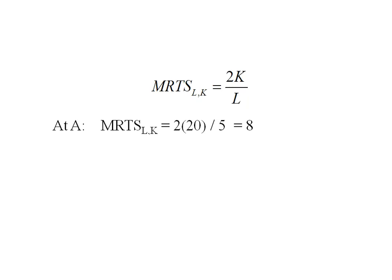At point A I can plug in the quantity of capital, which is 20, and the quantity of labor, which is 5, and find that my marginal rate of technical substitution is 8. So this firm could use 8 fewer units of capital and 1 more unit of labor. At point B I plug in 10 for capital and 10 for labor and I get 2, meaning the firm can use 2 fewer units of capital and 1 more unit of labor.